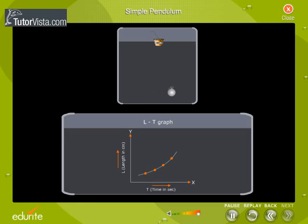The graph is a curve. This graph shows that the time period varies with the length of the pendulum.